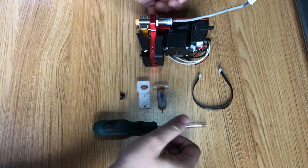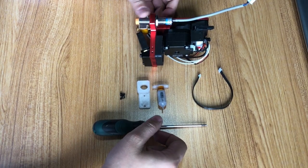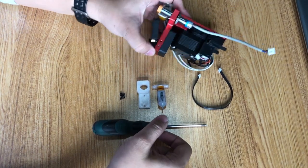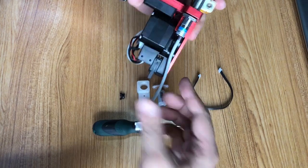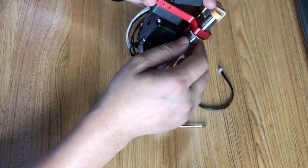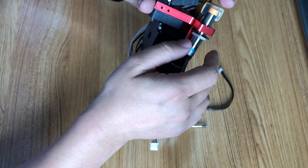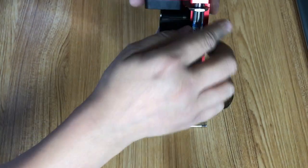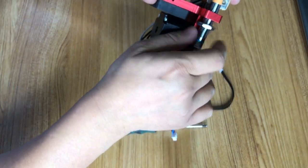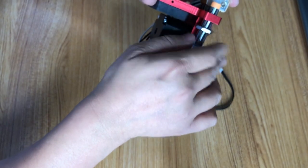This video will show you how to install the BLTouch on the old extruder. First, take off the inductive sensor. You can loosen it with a wrench. I already loosened it before, so it's easy to take off.